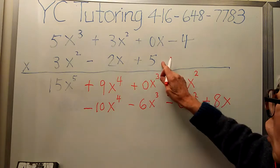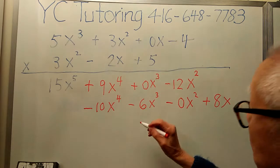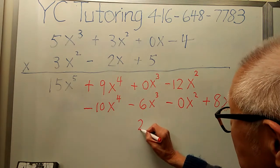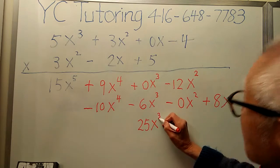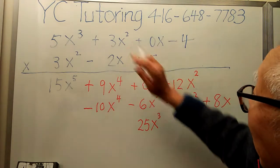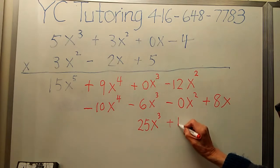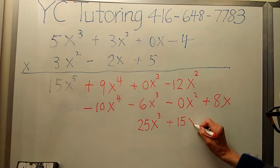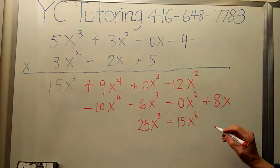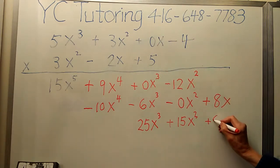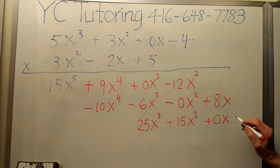The next is this times that is 25x³. This times that is 15x². This times that is 0x, this times that is minus 20.